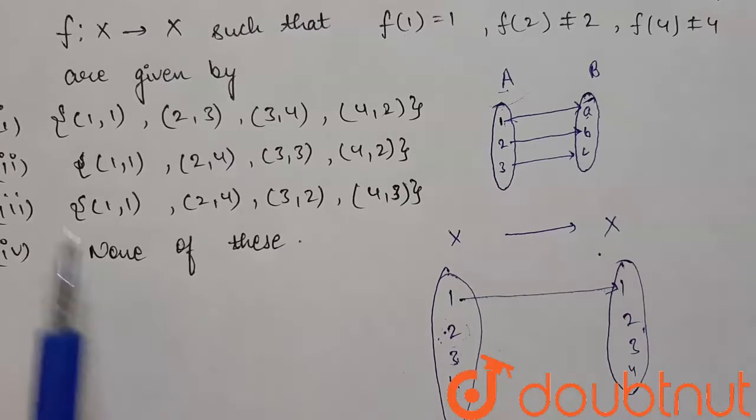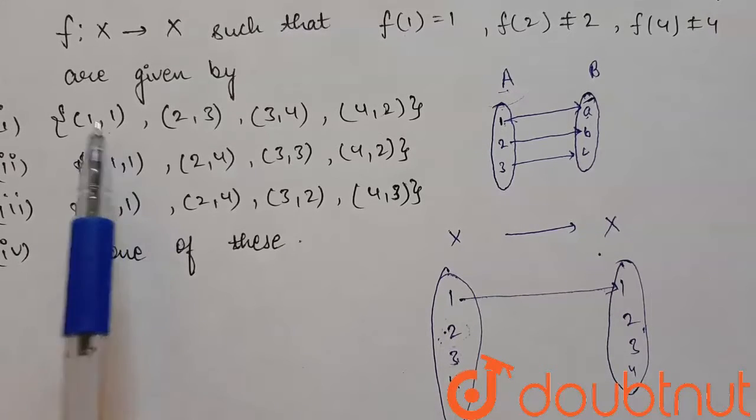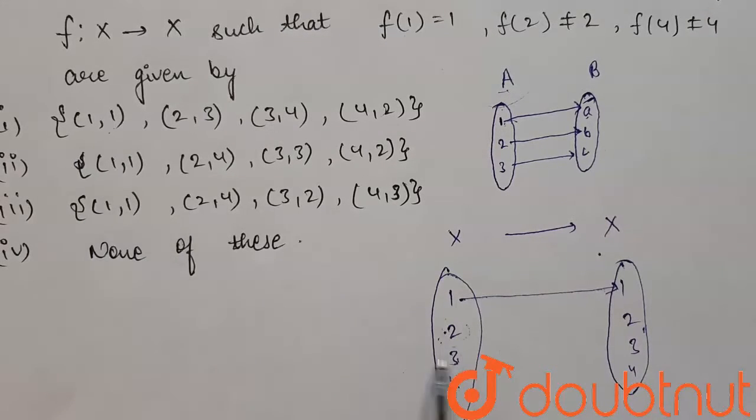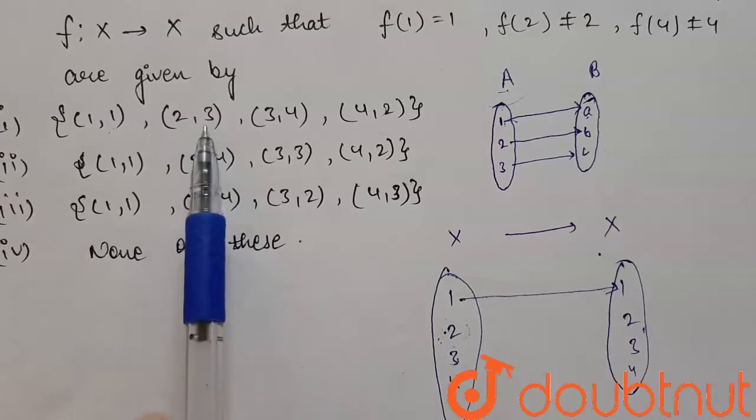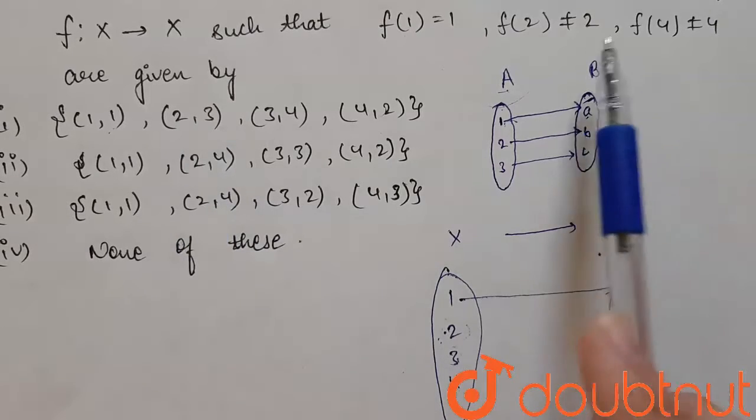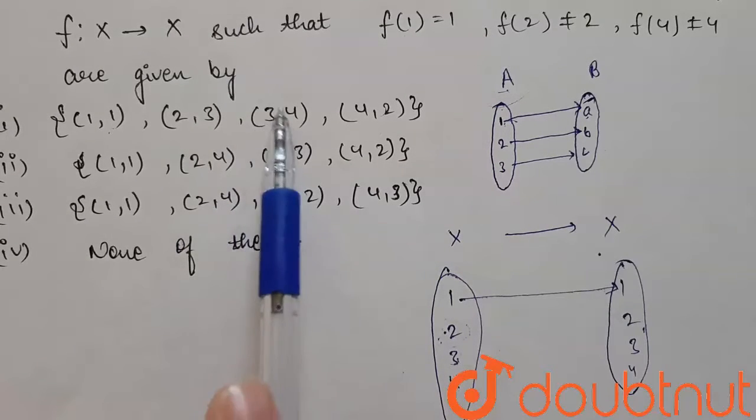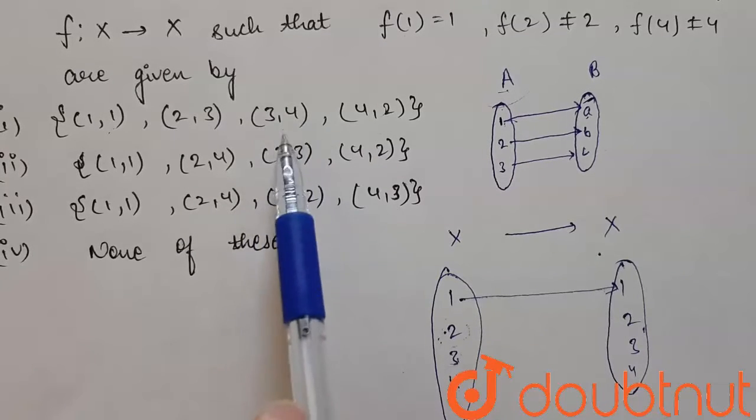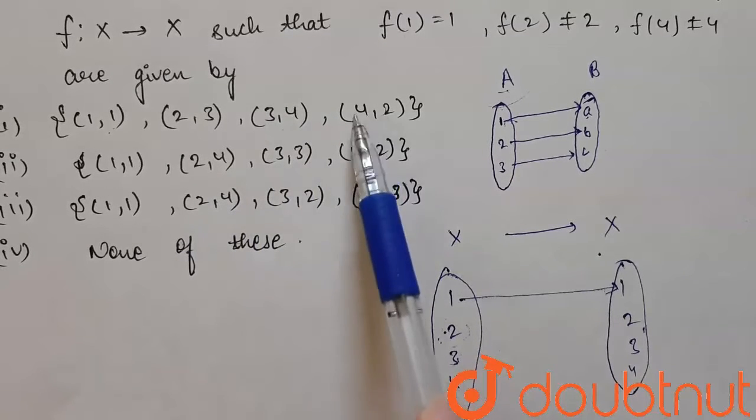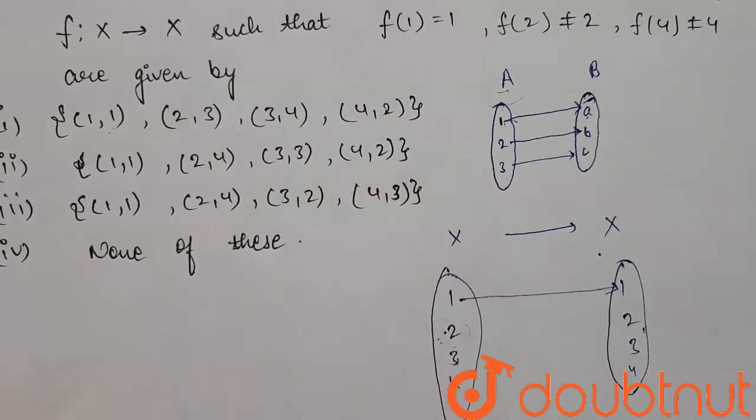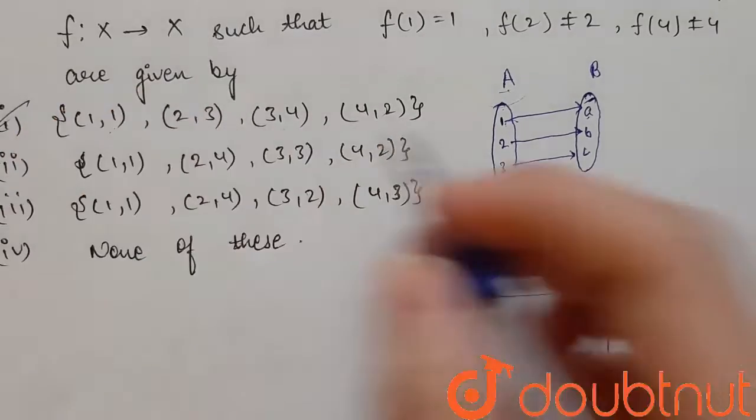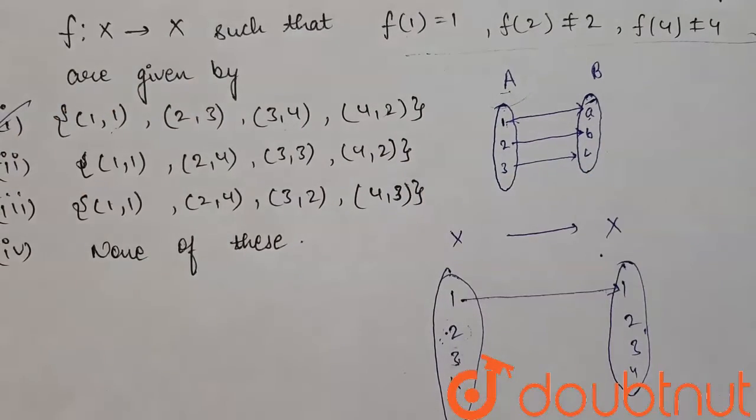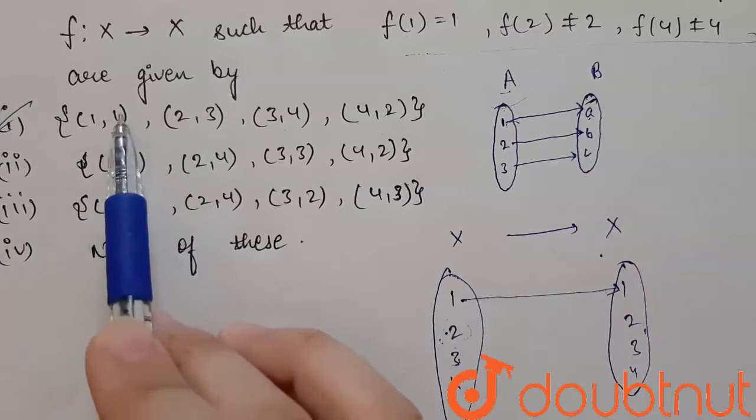So in option 1, 1 is connected to 1, that is f(1) = 1. 2 is to, f(2) is given as 3, so it may be possible. f(3) = 4, there is no restriction on 3, so we can have any value with this. And f(4) is given as 2.